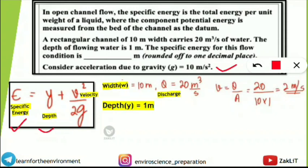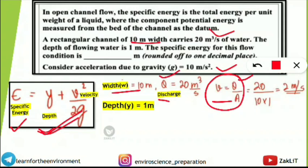The Brahmastra formula for specific energy is: E = y + v²/(2g), where y is the depth, v is velocity, and g is acceleration due to gravity. Given: width = 10 m, discharge Q = 20 m³/s, depth y = 1 m. Velocity v = Q / area = 20 / (10 × 1) = 20 / 10 = 2 m/s.